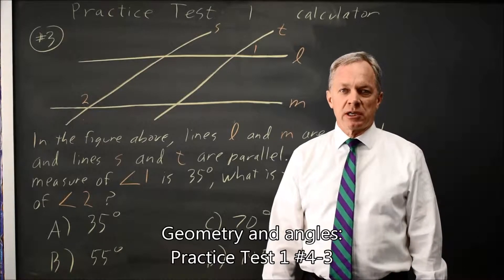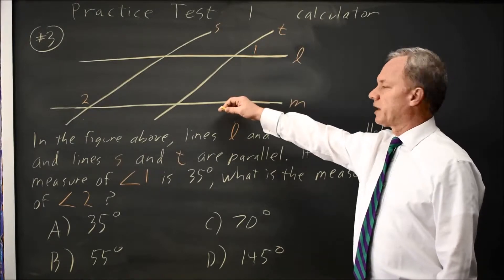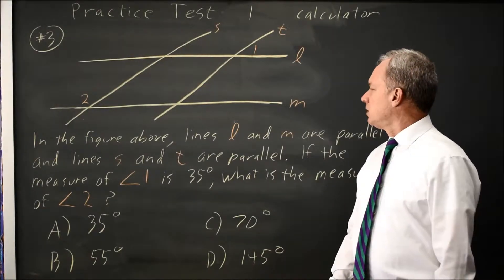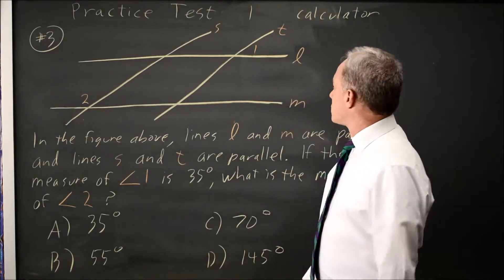This is SAT test 1, calculator question number 3. College Board gives you two sets of parallel lines where L and M are parallel, S and T are parallel, and angle 1 is given as 35 degrees.